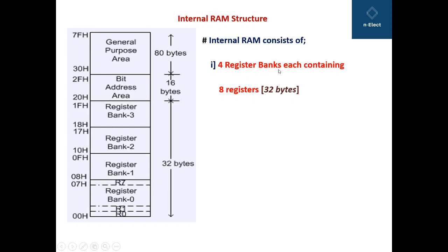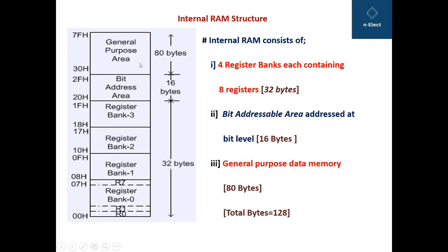Internal RAM consists of four register banks, each containing eight registers. So, register bank 0, register bank 1, register bank 2 and register bank 3. You can consider these four banks and they make around 32 bytes. While, second part is the bit addressable area, which is addressed at bit level and it is generally useful in bit level instructions. It is around 16 bytes, while the third and the last area is a general purpose area, which is around 80 bytes. So, 80 bytes plus 16 bytes plus 32 bytes that gives the entire RAM, which is 128-byte. So, this is how the internal 128-byte RAM is distributed.